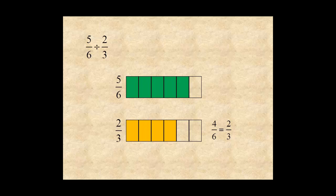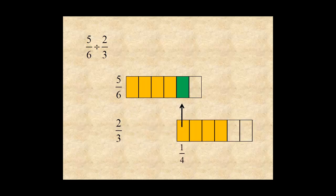Now, notice that two-thirds fits into five sixths once, with one unit left over. Notice that one part of four fits into what's left over. So we say two-thirds fits into five sixths one and one-quarter times.